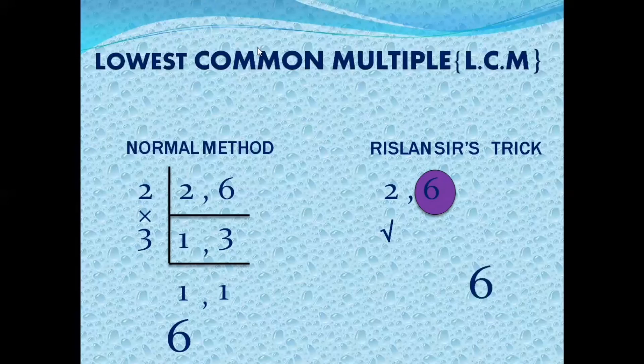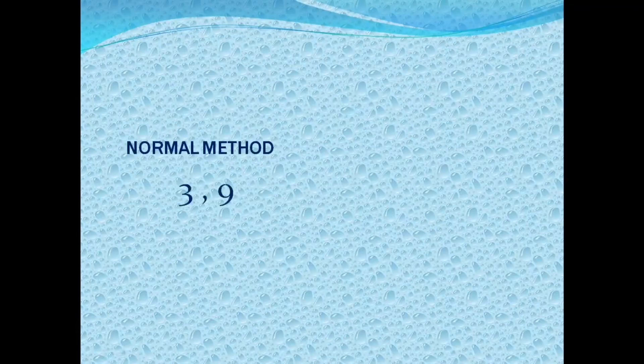Second question: find the LCM of 3 and 9. Normal method — 2 can't divide 3 and 9, so we move to 3. 3 divided by 3 is 1 time; 9 divided by 3 is 3. Dividing again by 3: 1 remains, 3 divided by 3 is 1.